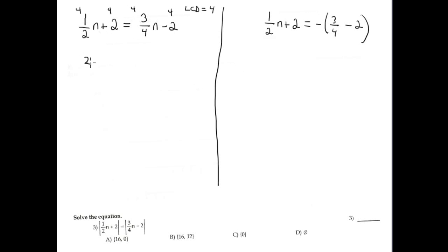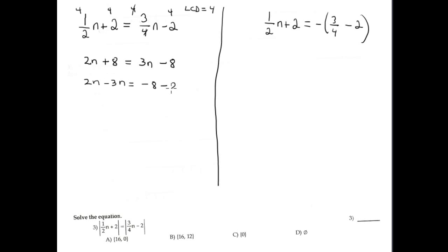Multiplying by 4: four divided by two gives 2m, plus 8, equals — canceling the four — three m minus 8. Moving terms: 2m minus 3m equals negative 8 minus negative 8, giving negative 1m equals negative 16. Dividing both sides by negative one, m equals positive 16. That is one solution.